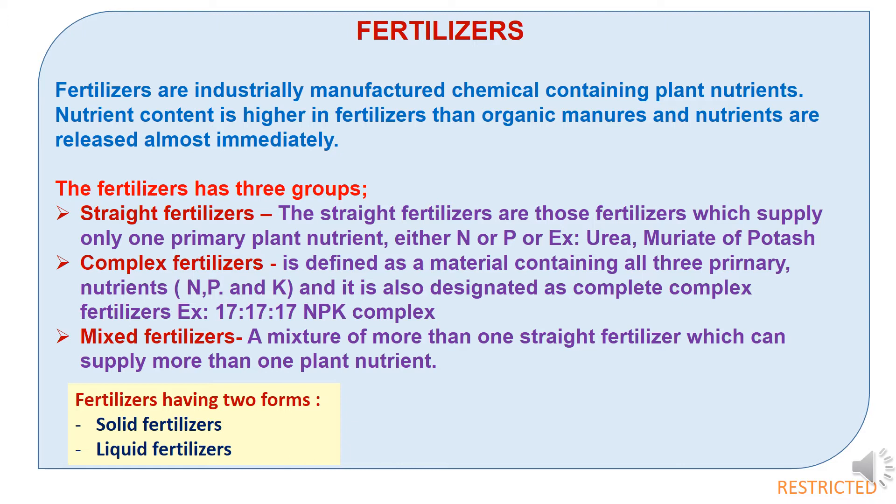The first type is straight fertilizers. Straight fertilizers are those which supply only one primary plant nutrient — either nitrogen, or phosphorus, or potassium. Examples include urea and muriate of potash.